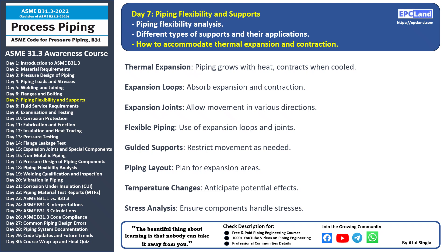Hello and welcome back to our 30-day beginner course on ASME B31.3. In today's session we'll delve into a crucial topic: how to accommodate thermal expansion and contraction. Thermal expansion and contraction are natural phenomena that occur as piping systems experience temperature changes. When piping is exposed to heat it expands; when cooled it contracts. This movement must be accommodated to prevent stress and damage.